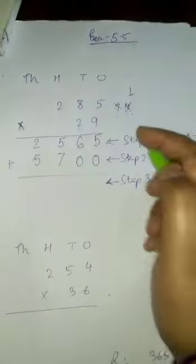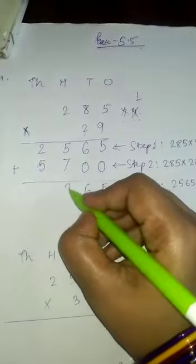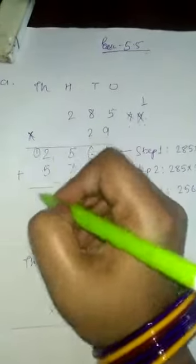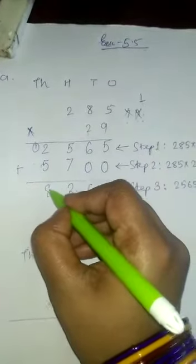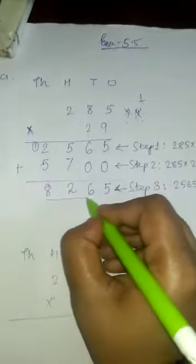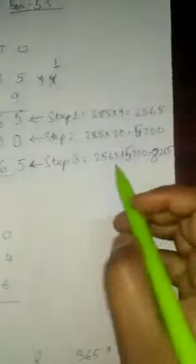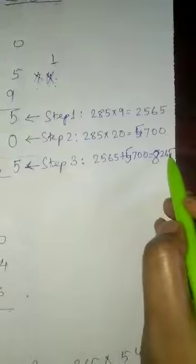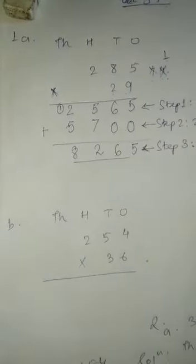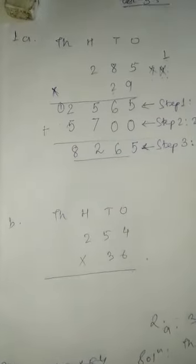Step number 3: we will add these two numbers. 5 plus 0 is 5. 6 plus 0 is 6. 5 plus 7 is 12 — write 2, carry 1. 1 plus 2 is 3, plus 5 is 8. So after adding, the answer is 8265. So 2565 plus 5700 equals 8265. Let us write this answer in our book.